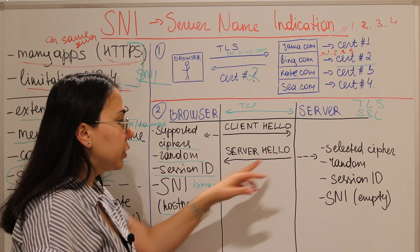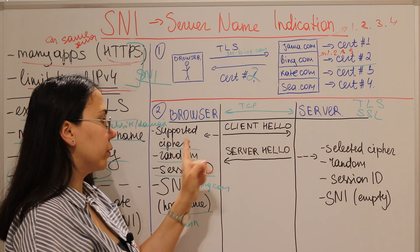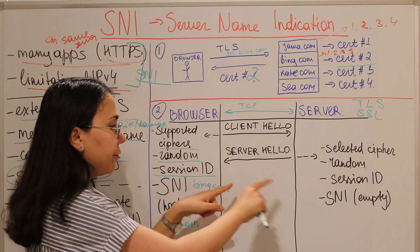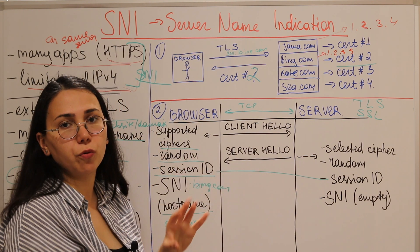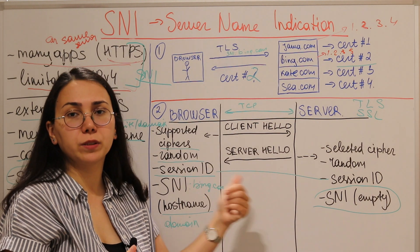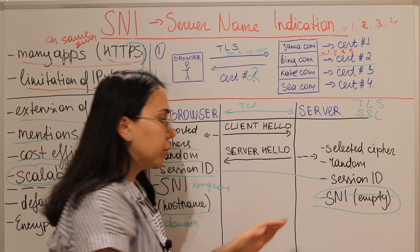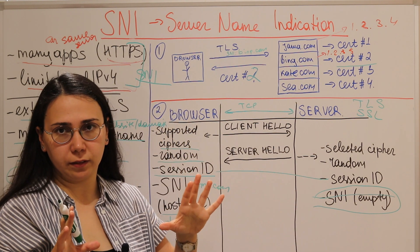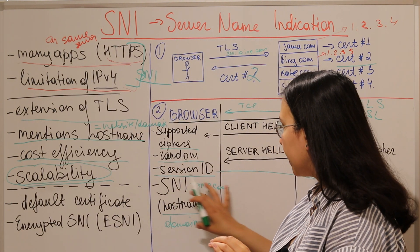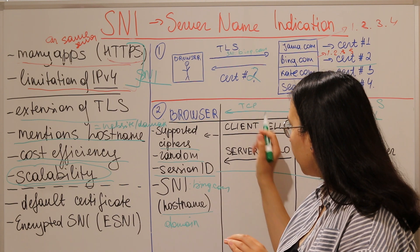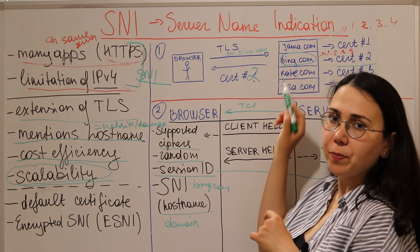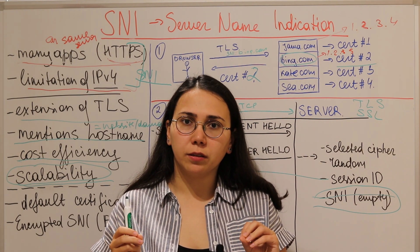The server responds with a Server Hello, which includes: the selected cipher from the client's supported list, the server's own random number, and the same session ID to confirm there's no eavesdropping. The server also returns the SNI extension, but now it's empty — because it's the client who sends the SNI, not the server. Sometimes servers omit it entirely. This is how SNI is exchanged at the protocol level, enabling the server to serve the correct certificate — in this case, the bing.com certificate.